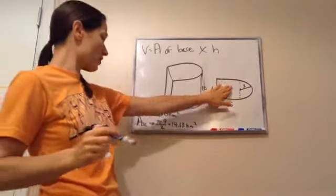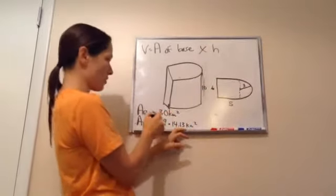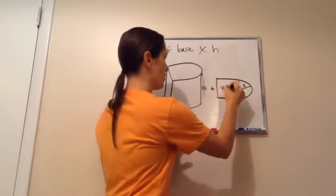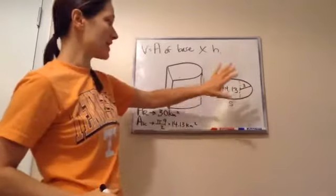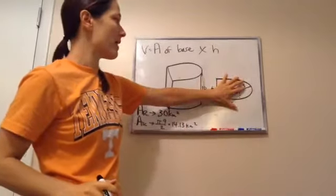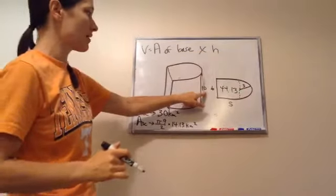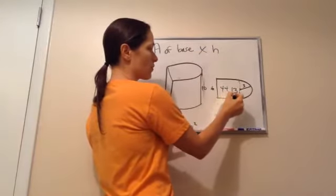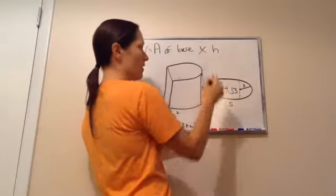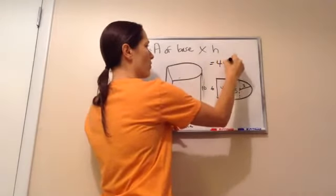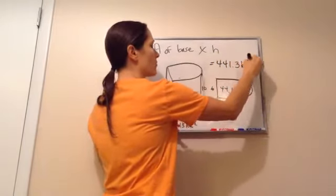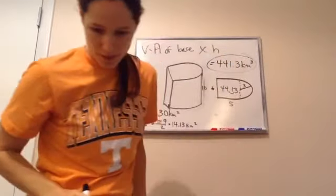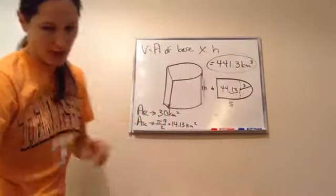The rectangle and semi-circle together give 44.13 kilometers squared — that's the area of the base. Multiplying by the height of 10 just moves the decimal once, giving 441.3 kilometers cubed.